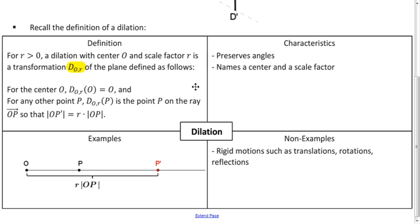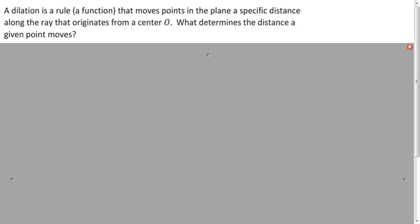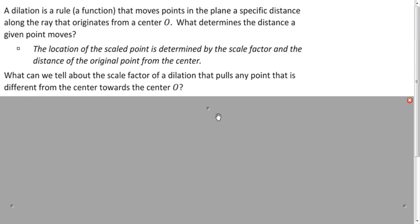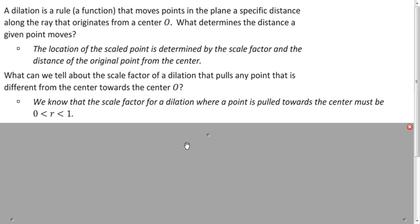Dilations preserve angles, and unless you're doing an identity transformation, the rigid motions are not examples of dilations. Rigid motions always preserve distance and angle measurements, but dilations — unless it's the identity dilation — do not preserve distance. To figure out the distance you move given points, that's determined by the scale factor. If you're pulling a point towards the center, that's a reduction, so the scale factor is between 0 and 1.